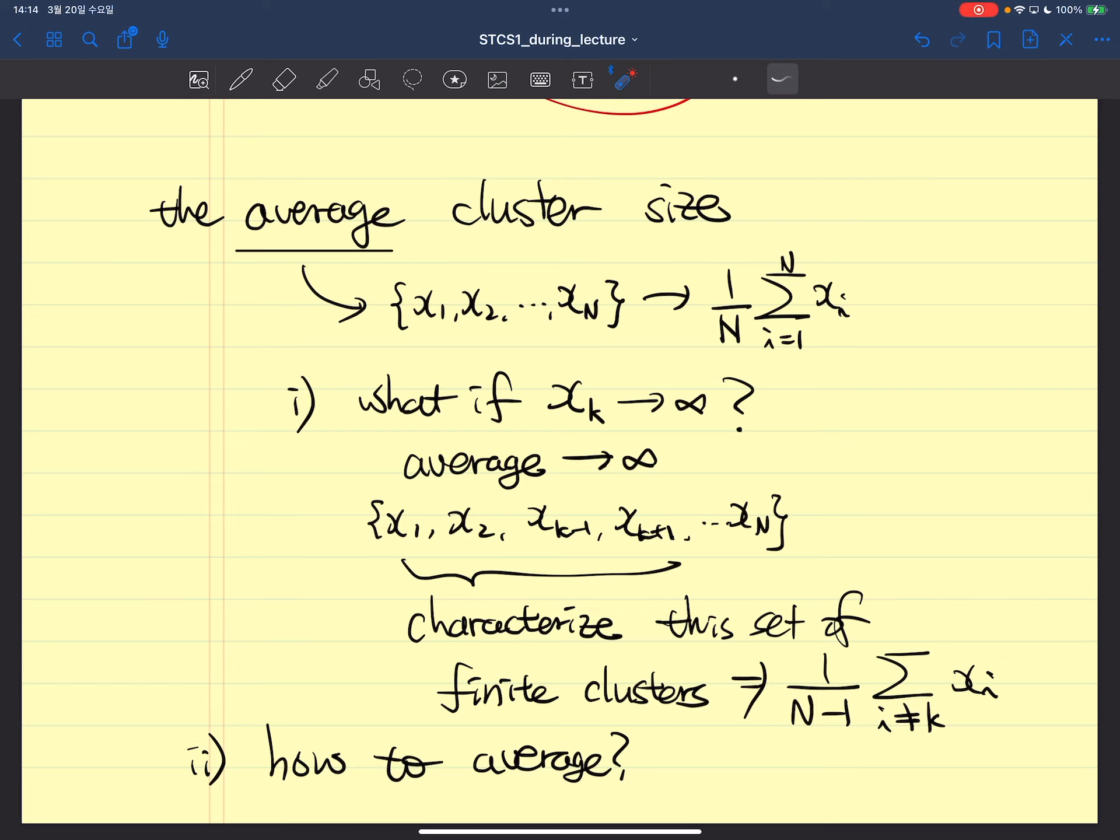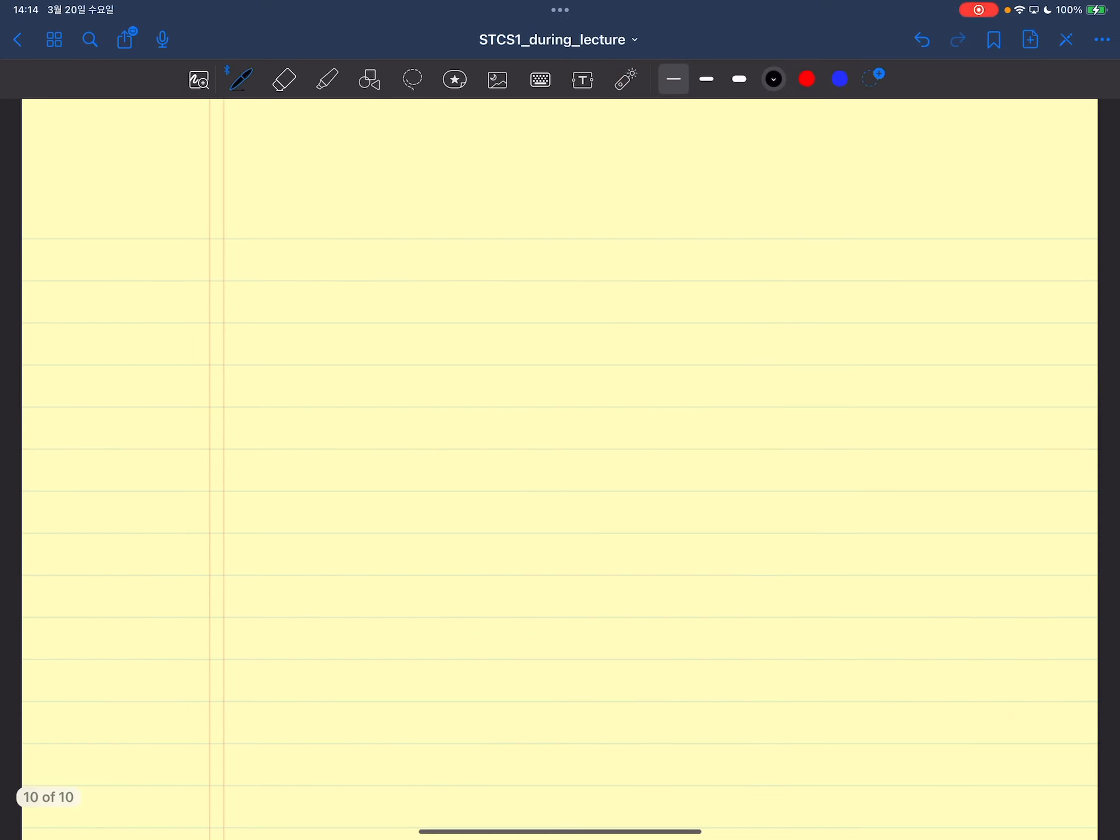But if we return to the freshman general physics course, we're dealing with the concept of weighted average. For example, if you have two particles with mass m1 and m2, and the coordinate in one dimensional system is this one.